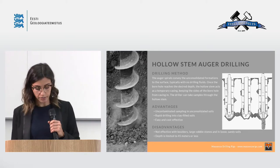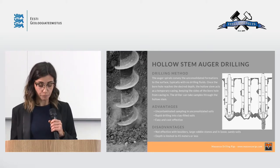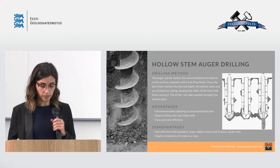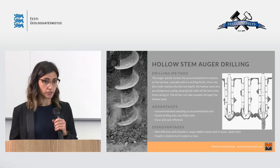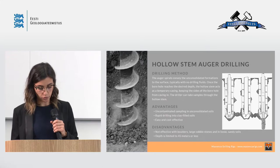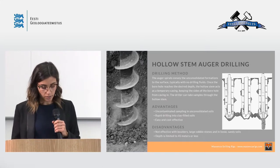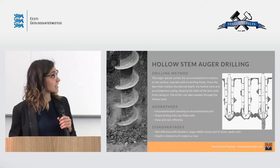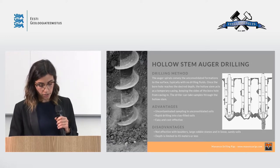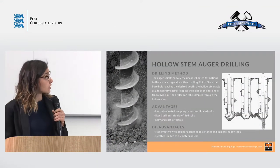Once the augers have advanced the hole to the desired depth, the stem and plug are removed. A sampler may then be lowered through the hollow stem augers to the soil at the bottom of the borehole. If the auger has been seated into rock, then a standard core barrel can be used too. Hollow stem auger methods are commonly used in clay soil and granular soil above the ground level, where the boring walls may be unstable. Indeed, the augers form a temporary casing to allow sampling of undisturbed soil below the pit. So the hollow stem auger drilling is the ideal method for advancing shallow borings in unconsolidated formations, as it allows uncontaminated sampling in unconsolidated soils.